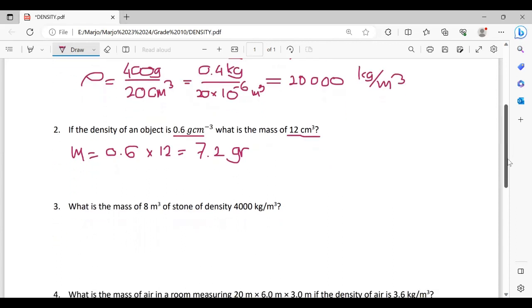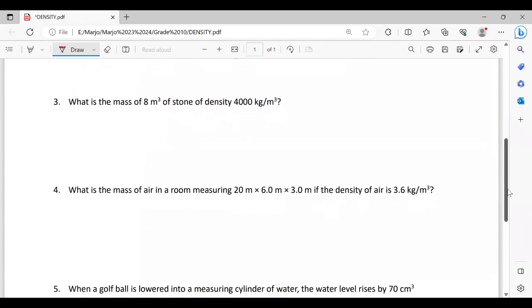Next, number three: What is the mass of 8 meters cube (this is the volume) of stone of density 4,000? This is density, this is ρ. So we're going to find m, mass. Mass equals ρ times volume, so it means 4,000...